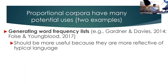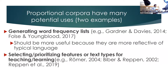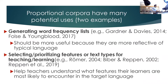The goal of most word frequency lists is to help learners see the words most useful to them because they're the words they're going to see the most. It's better to use a proportional corpus for this purpose because it's more reflective of the target variety they want to learn. Likewise, if we're selecting or prioritizing features or text types for teaching and learning, a proportional corpus can help us understand what text types our learners are most likely to encounter, perhaps in a language for specific purposes setting.